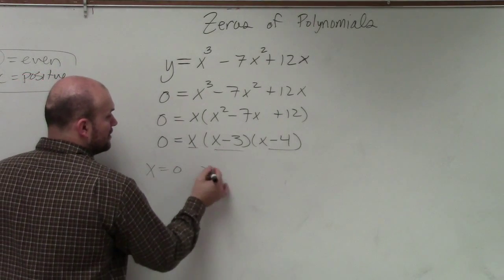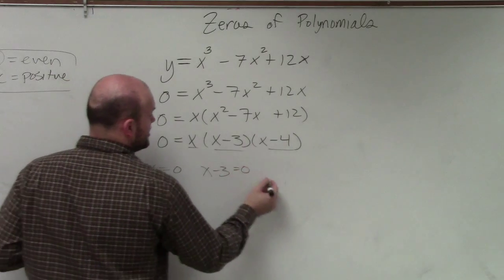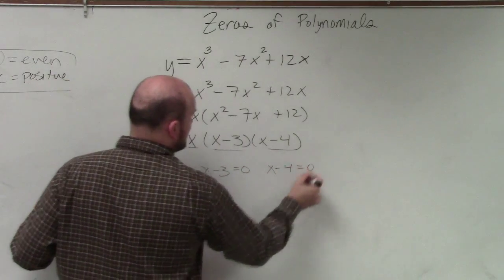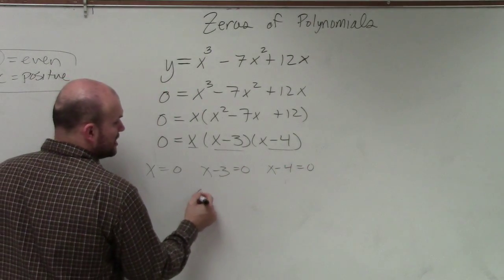So x equals 0, x minus 3 equals 0, and x minus 4 equals 0. Therefore, my zeros are 0.